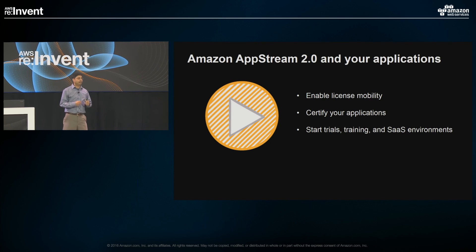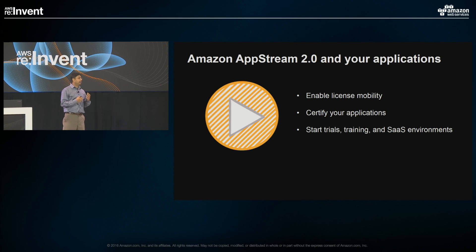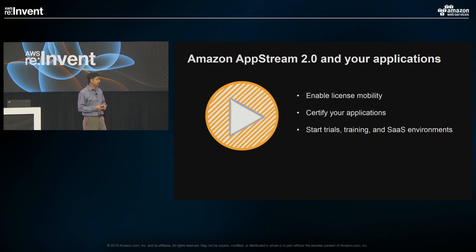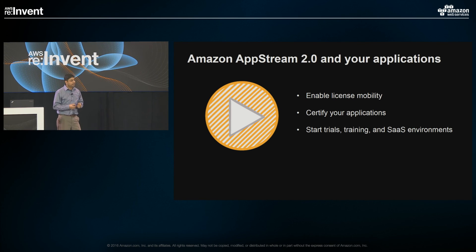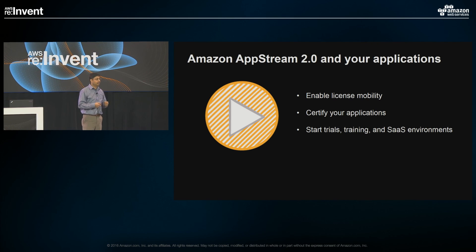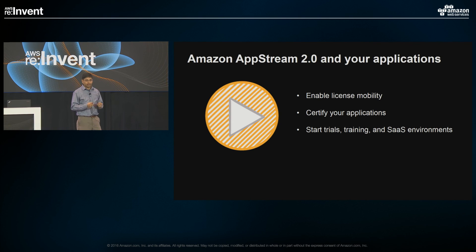What other things can we do working together? If you're an ISV who builds software that enterprises consume, we want to work with you to build a license mobility program so customers can run workloads on AWS. We're also opening a certification opportunity where we want to certify your application running on AWS — whether on a compute instance, a graphical instance, or using Elastic GPU. We want to enable customers to start using trials, use this as a training platform, and use this as a software-as-a-service delivery vehicle. Details of all this will be on the Amazon AppStream 2.0 portal going live today.